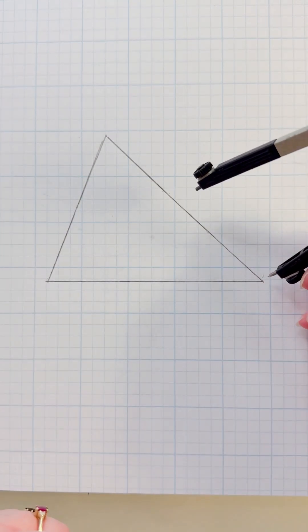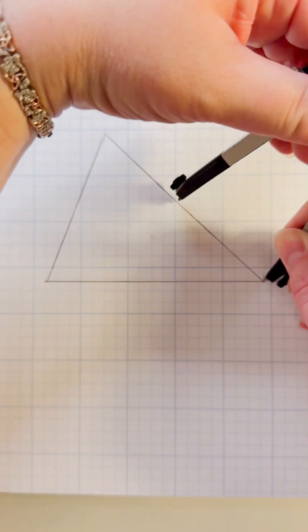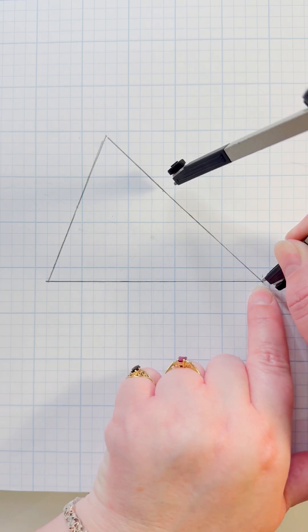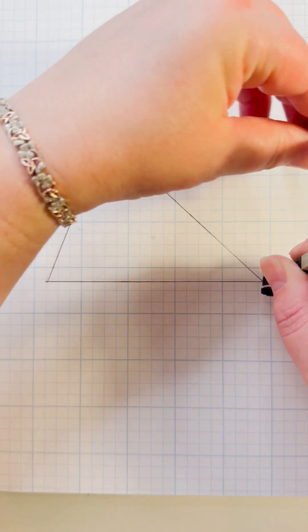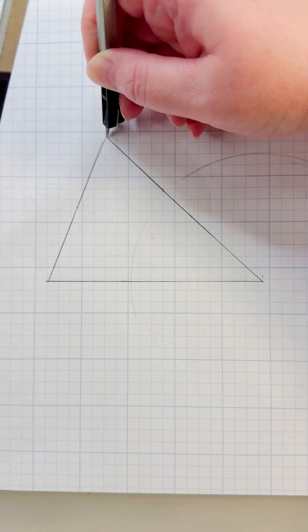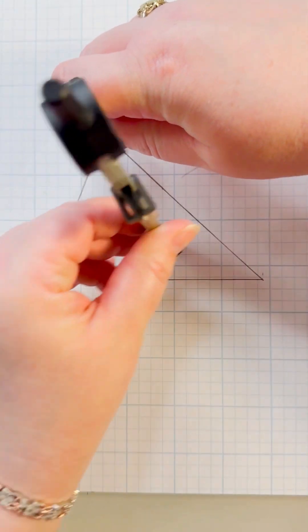So we're going to start. Put your compass point on one end of the line. You're going to have an arc at the top and an arc at the bottom. Move it to the other side of that line, arc at the top, arc at the bottom.